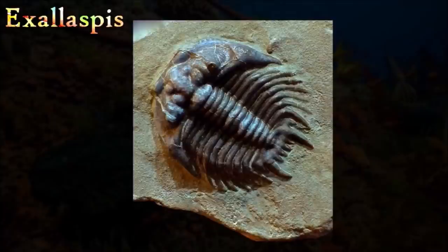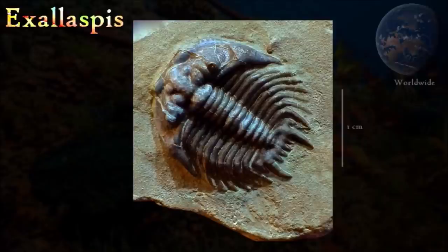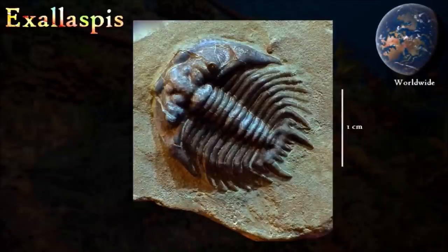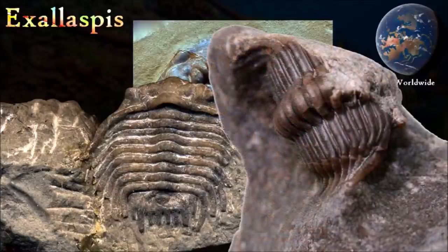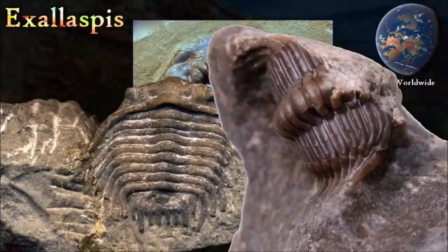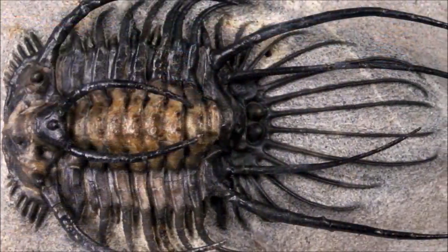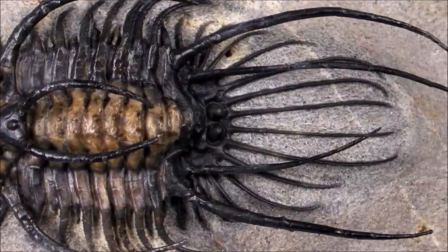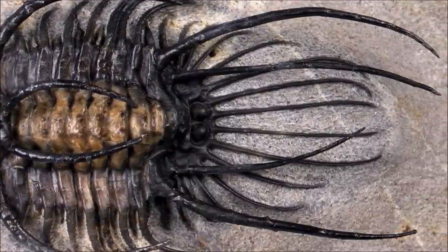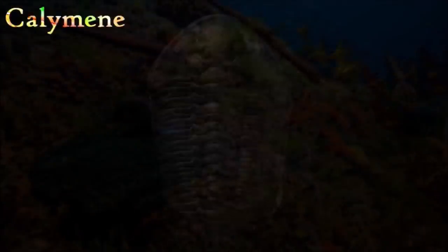This trilobite's head shield had a prominent central raised area that narrowed toward the front, with three distinct lobes — the hindmost being the largest. A curved raised ridge ran from the front of the glabella to the rather small eyes, which were located on the back part of the head shield about halfway between the glabella and the lateral edge. The thorax was composed of 10 segments, which laterally tapered into long curving spines on both sides. The tail shield was small and had two large backward-pointing spines with a row of four small ones between them.